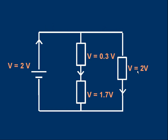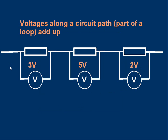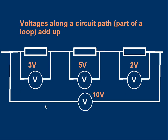One useful thing to note: if we have a part of a circuit with, say, three resistors in series — with three, five, and two volts across each — the total voltage between the left-hand side and the right-hand side would be ten volts. Thinking in terms of energy makes this clear: three, five, and two joules per coulomb total ten joules per coulomb being turned to heat. So the total voltage across a series section equals the sum of the individual voltages.